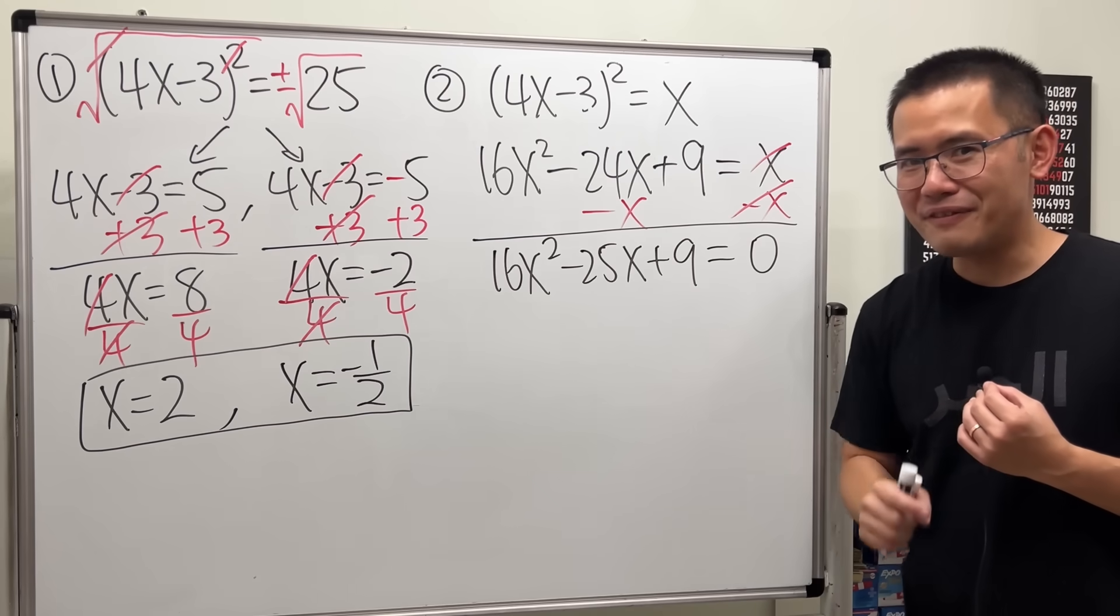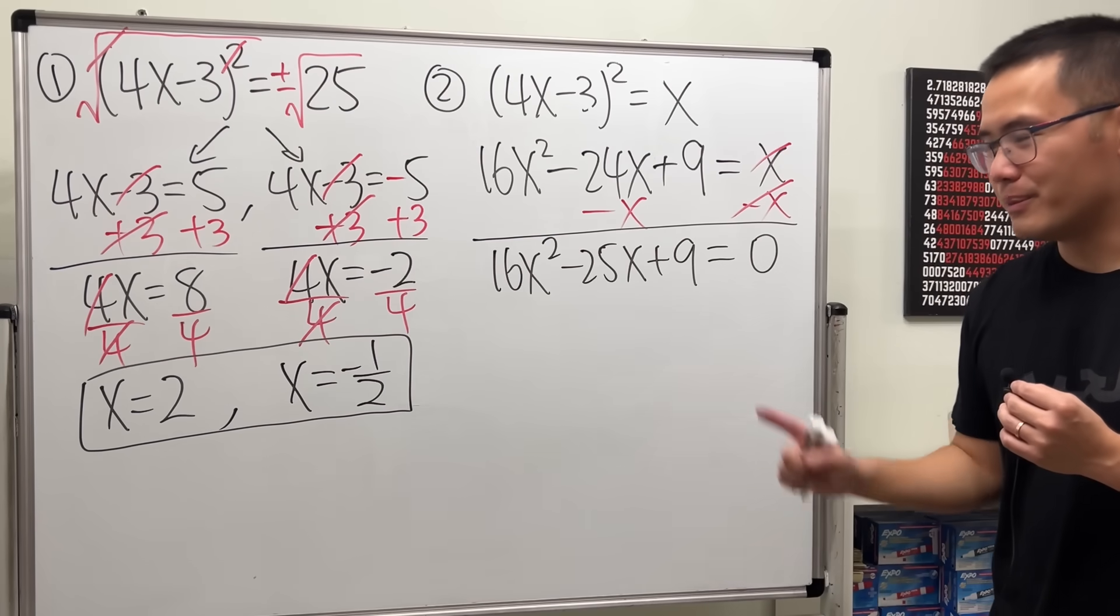So, this is 16x squared minus 25x plus 9 equals 0. So, how do we solve this? By factoring. This is actually factorable. Here, let me show you.